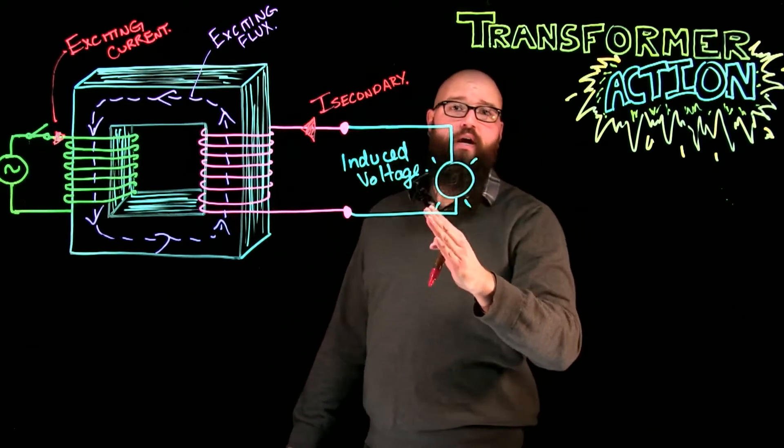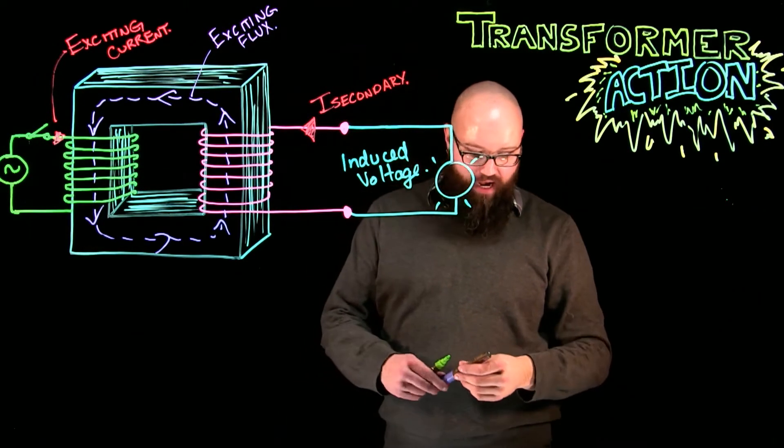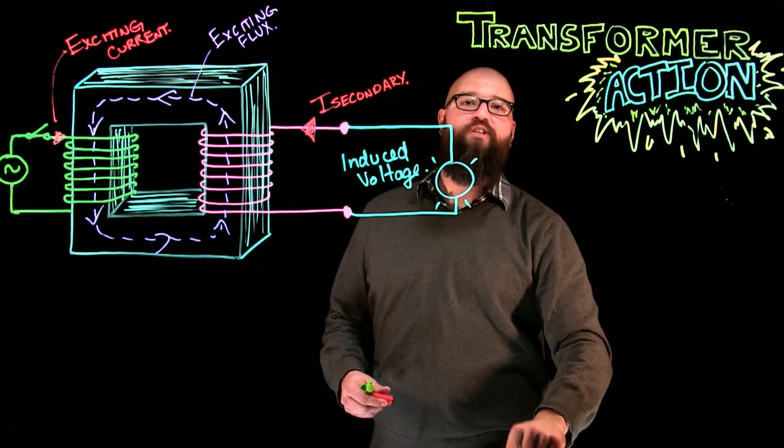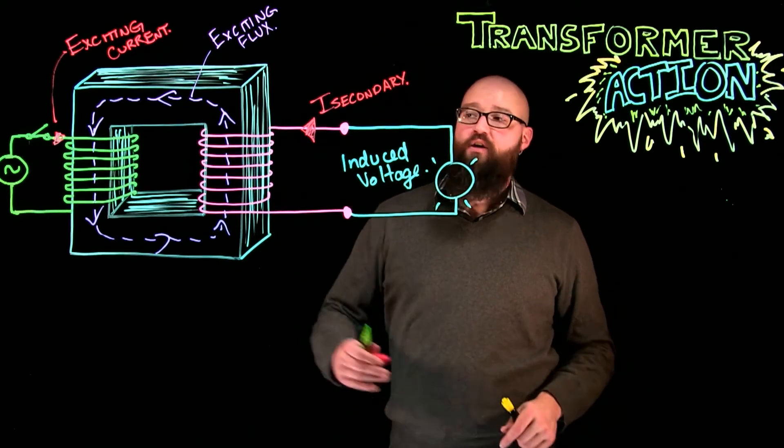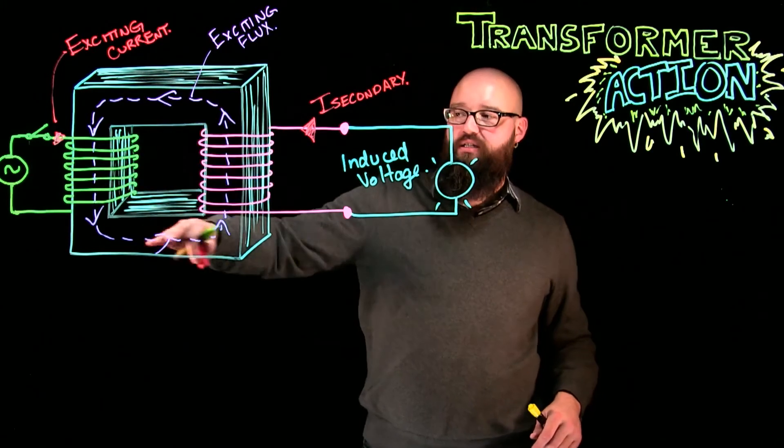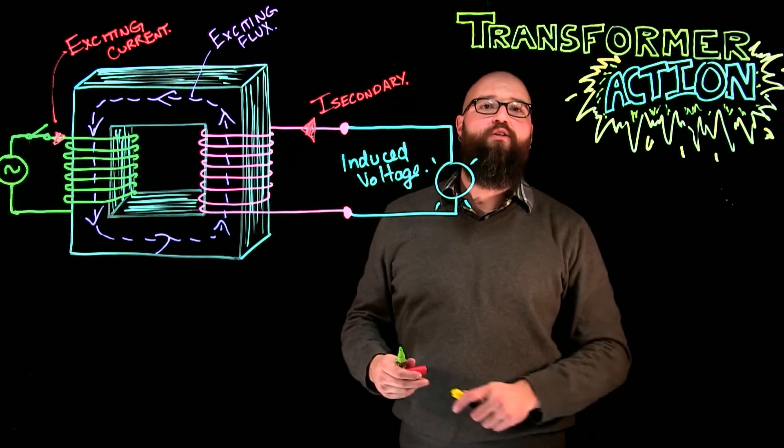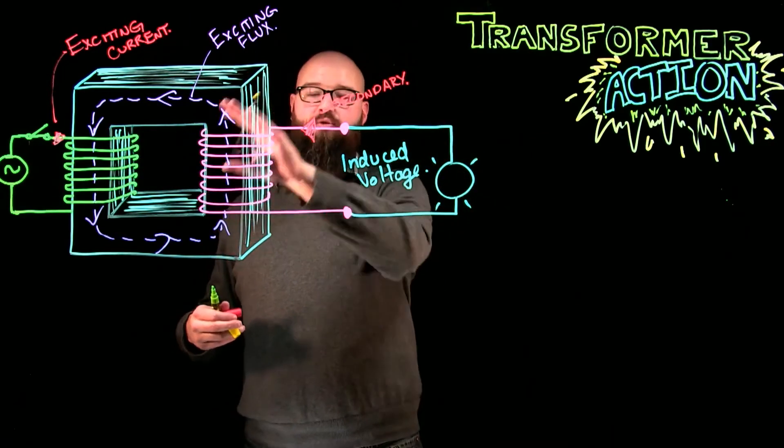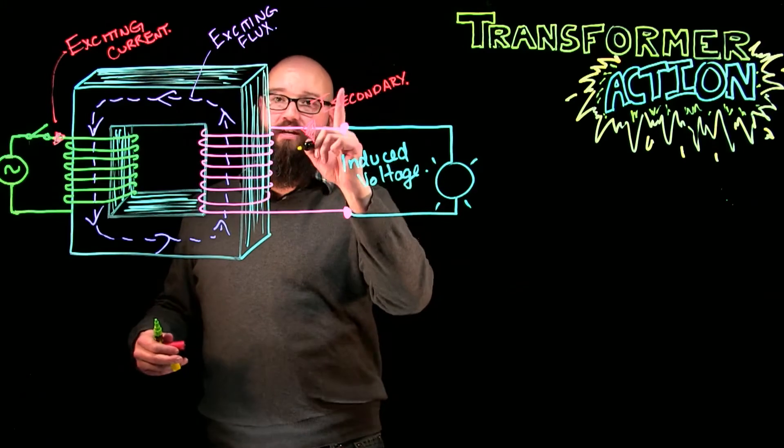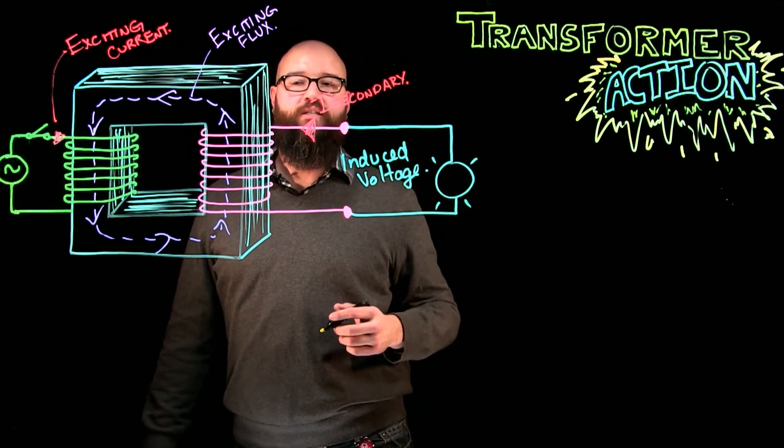And again, as soon as I have a current flowing through a conductor, what happens is it induces or creates, rather, a magnetic field around that conductor. So, we already have our exciting flux in the core of our transformer right now. But this secondary current is going to create a secondary flux. And again, throughout these coils, it's going to aid. But here's the key. It's in the opposite direction that the exciting flux is in.